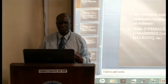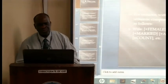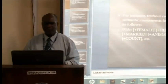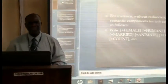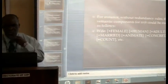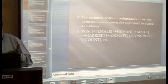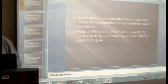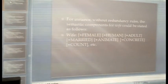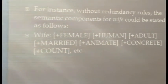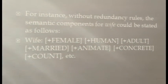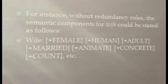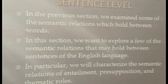In specific terms, this rule says that the feature plus animate need not be specified in the lexical entry for lexical items such as father, girl, and professor, since it can be inferred from the feature plus human. Without redundancy rules, the semantic components could be stated as: plus female, plus human, plus adult, plus married, plus animate, and so on. But when we apply redundancy rules, the meaning of wife stops at the feature plus married.